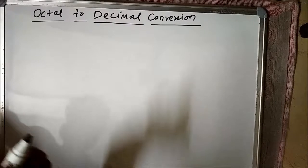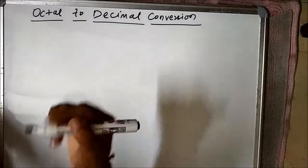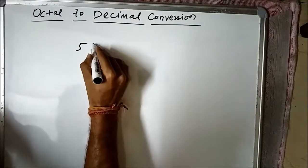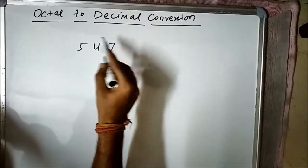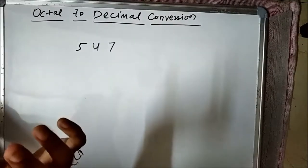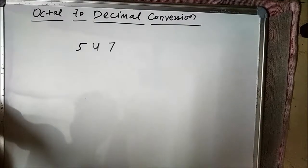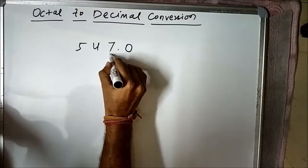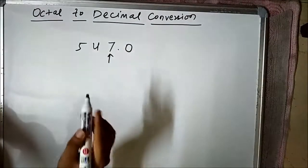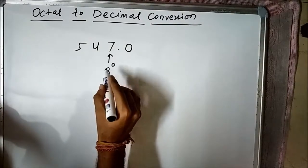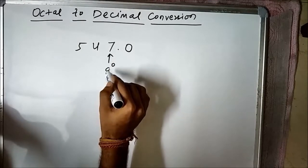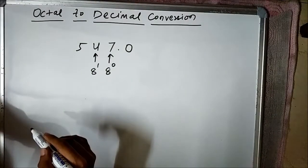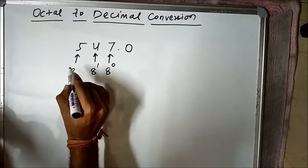Before that, we must have a quick recap about the weight system in octal numbers. Let us take an octal number: 5, 4, and 7. We can say this is an octal number because all the digits are less than 8 — only 0 to 7 is allowed in the octal number system. This 7, according to its position, has a weight value of 8 to the power 0. This 4 has a weight value of 8 to the power 1, and this 5 has a weight value of 8 to the power 2.